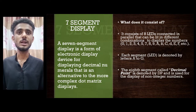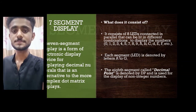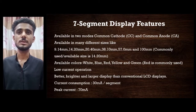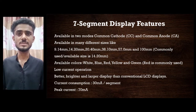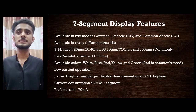The eighth segment, called the decimal point, is denoted by DP and is used for the display of non-integer numbers. Seven-segment display features: available in two modules — common cathode (CC) and common anode (CA). Available in different sizes like 9.14 mm, 14.20 mm, 20.40 mm, 38.10 mm, 57.0 mm, and 100 mm. The commonly used size is 14.20 mm. Available colors: white, blue, red, yellow, and green. Red is commonly used.